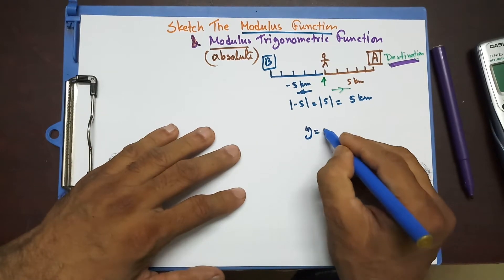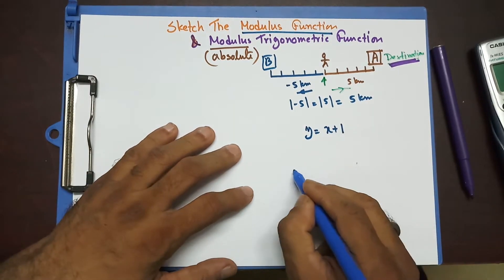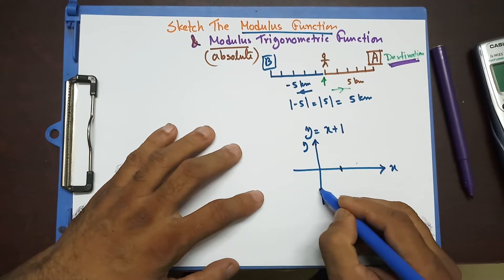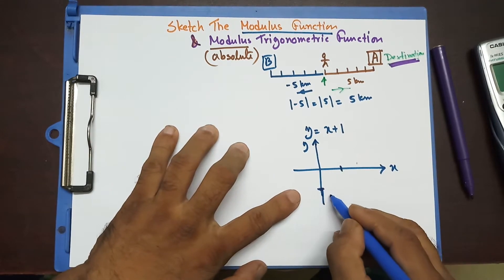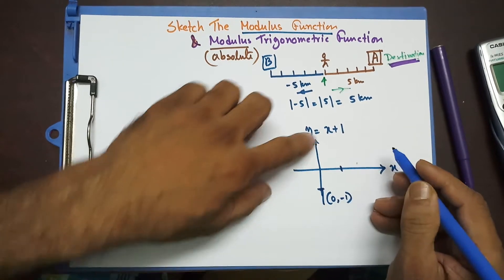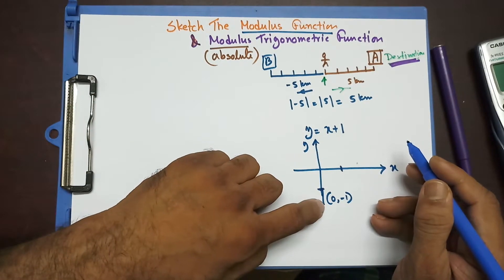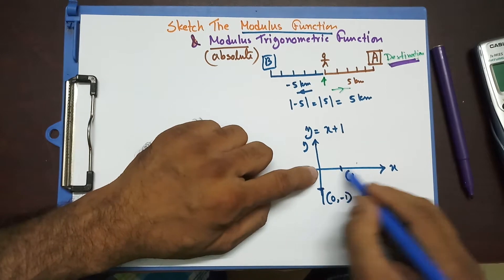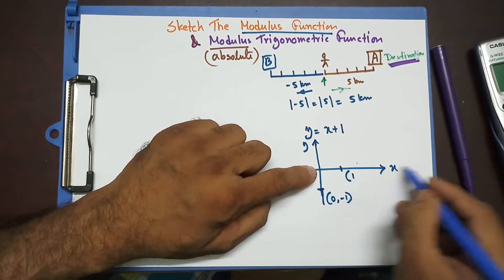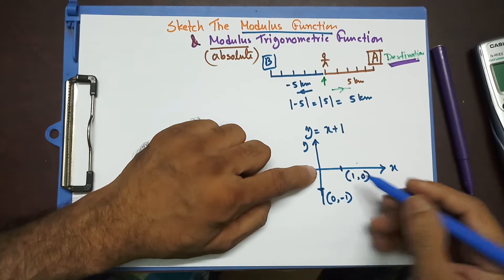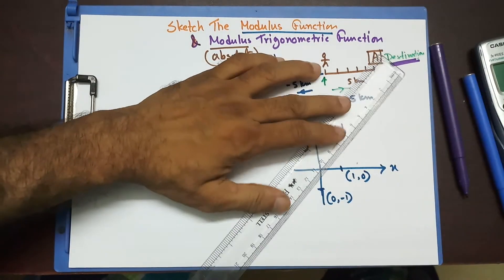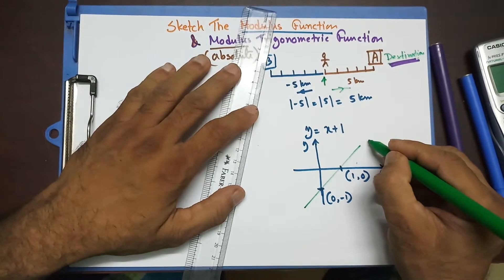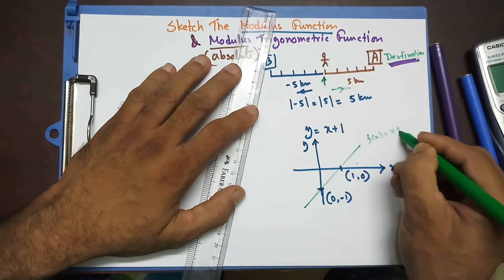Let's deal with a very simple concept — a linear equation: y = x + 1. If you draw this in Cartesian form, this is X, this is Y. The point on the Y-axis is (0, -1), since when X = 0, Y = -1. On the X-axis, Y = 0, so that coordinate is (1, 0). The graph of x + 1 has a gradient of 1 and goes upward — this is our function y = x + 1.